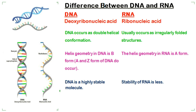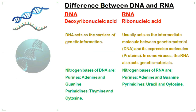DNA occurs as a double-helical conformation, while RNA occurs as irregularly folded structures. The helix geometry in DNA is B form, while the helix geometry in RNA is A form. DNA is a highly stable molecule, while the stability of RNA is less.